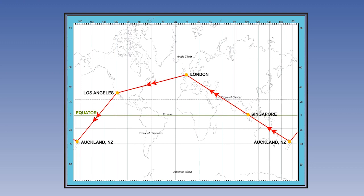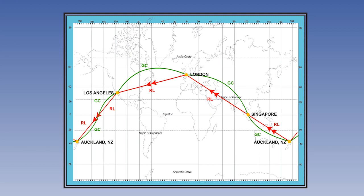Now, remembering where the equator is, try to visualise where you think the corresponding great circle routes will appear. It should look like this. Did you get it right? It may seem counterintuitive, but the curved lines actually represent the shortest route. Most people underestimate the amount of curvature on the great circles.